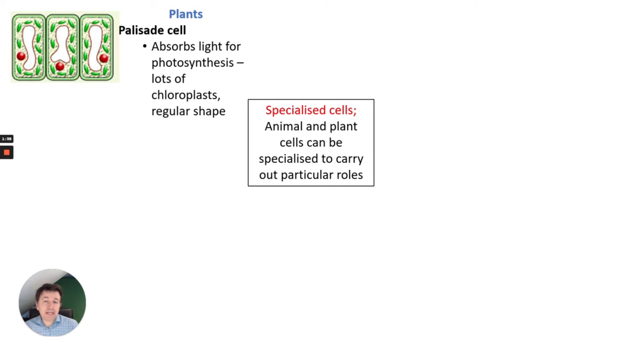Firstly, in plants we've got palisade cells. Those cells are found at the top of the leaf and they absorb light for photosynthesis. One of the key things is that they have lots of chloroplasts and a regular shape. The reason they have chloroplasts is to allow them to photosynthesize.